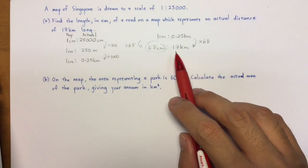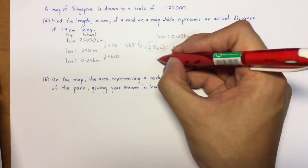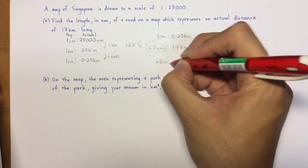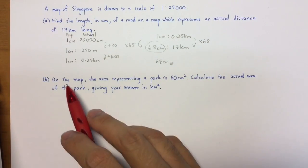So, basically, what we're trying to say here is 17 kilometers in the actual distance is represented by 68 cm on the map. All right, moving on.